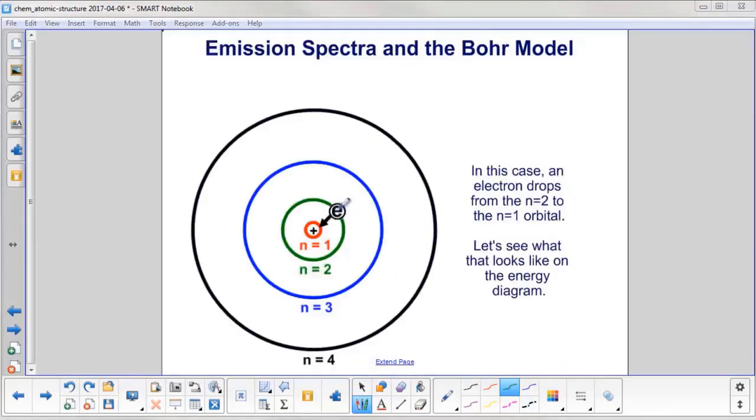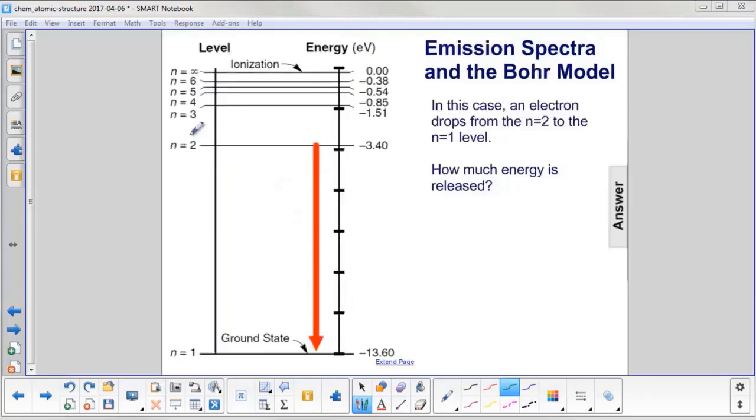Start with this case. We have an electron in the n equals 2 level, and it drops from this orbital to the n equals 1 orbital. Let's see what that looks like on the energy diagram. Here's n equals 2 at an energy of negative 3.40 eV, and that drops down to the ground state of negative 13.60 eV. How much energy is released?